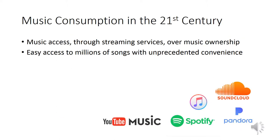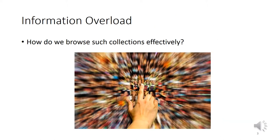Giving a brief introduction, the way we consume music changed dramatically over the last decades. Instead of buying physical or even digital media, we are shifting towards music access using streaming services that offer massive catalogs such as Spotify, YouTube Music and so on. And this has its consequences, namely how can we browse such massive collections effectively?